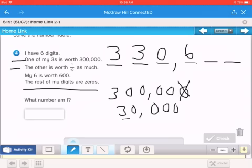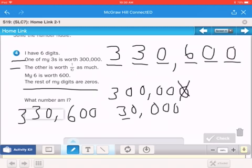And the rest of my digits are 0. So we put a 0 here, a 0 there, and a 0 there. So my number would be 330,600. So that is your answer. Again, 330,600.